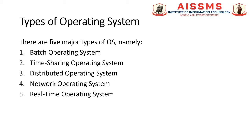Evolution of operating system since 1950 is described below. In this video, I will discuss the major types of operating systems evaluated over the past 70 years: batch operating system, time-sharing operating system, distributed operating system, network operating system, and real-time operating system.